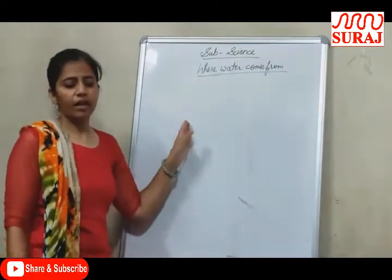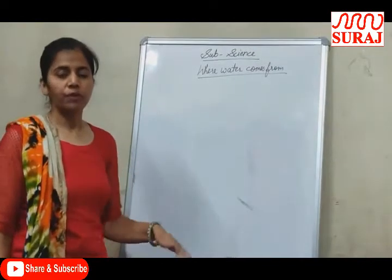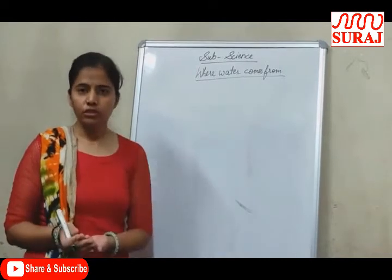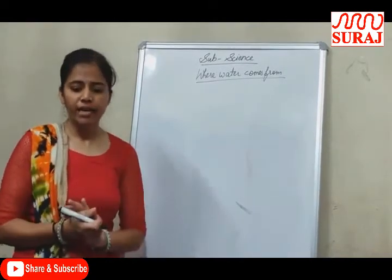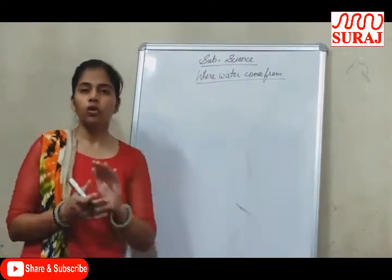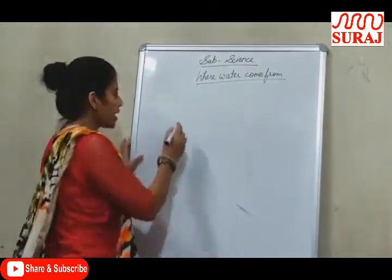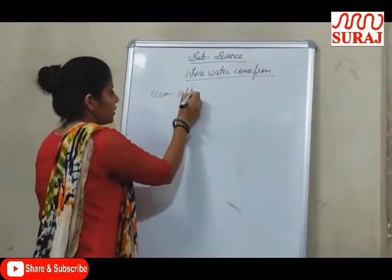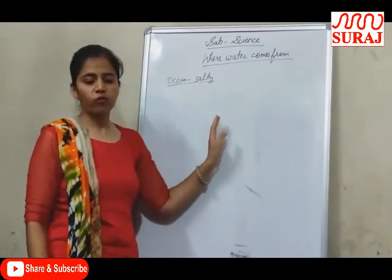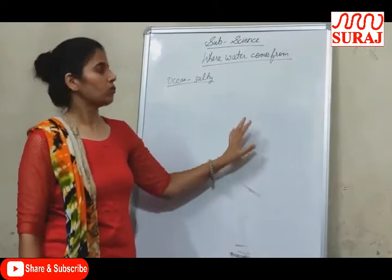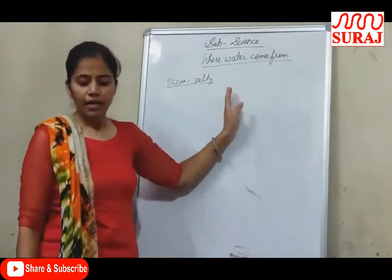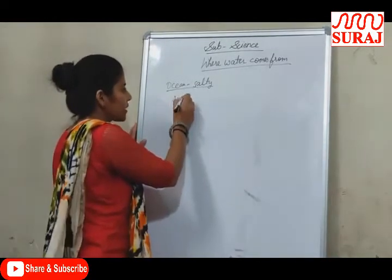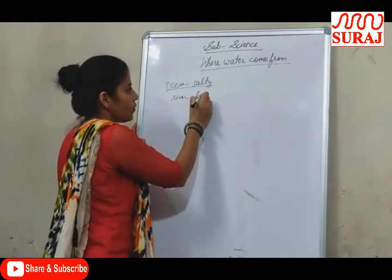Where does water come from? We have a lot of water present. There is a lot present in oceans, rivers, and lakes. But the ocean water is salty. This is why the usable water is very low. We do not use this water. Usable water is present in rivers, lakes, and ponds.